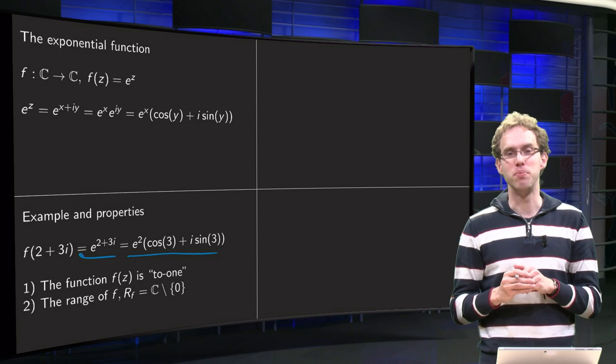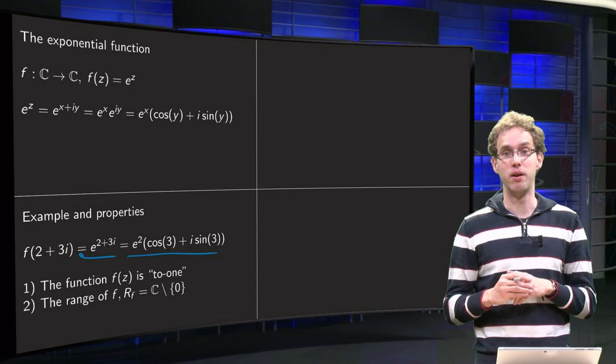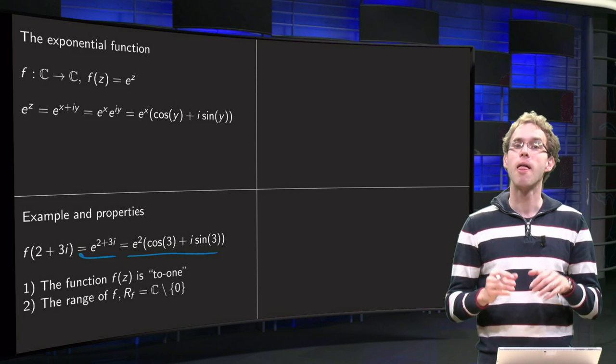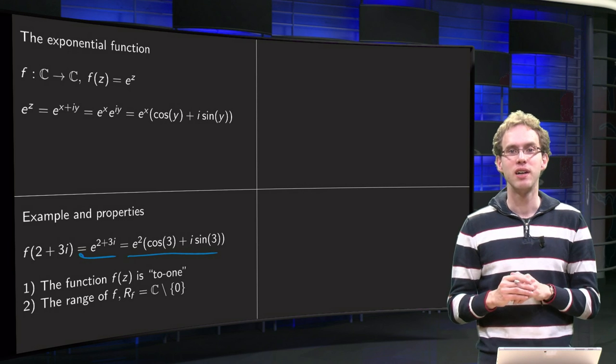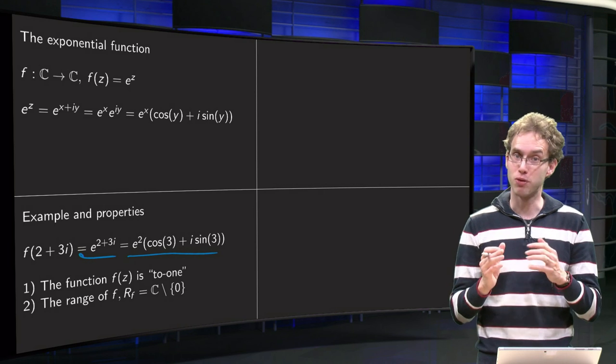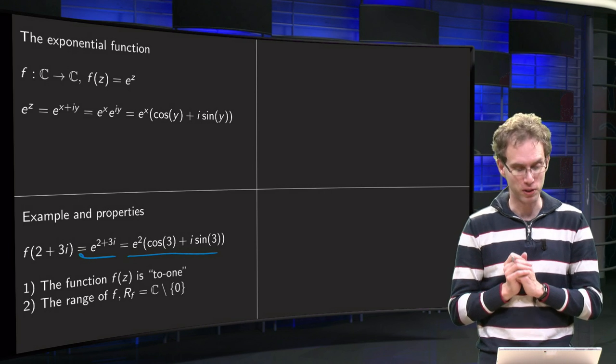Because if you have real functions, all functions are to one. But we will encounter later different types of functions. So function f of z is to one is for a complex function kind of special already.